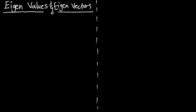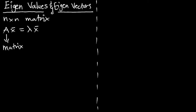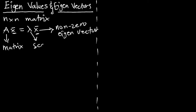For a given n-by-n matrix, in order to start to evaluate the eigenvalues and eigenvectors, we must know this expression: A multiplied by X should be equal to a certain lambda multiplied by the same X. Here, A is our matrix, X is our non-zero eigenvector, and lambda is a scalar which we refer to as the eigenvalue.